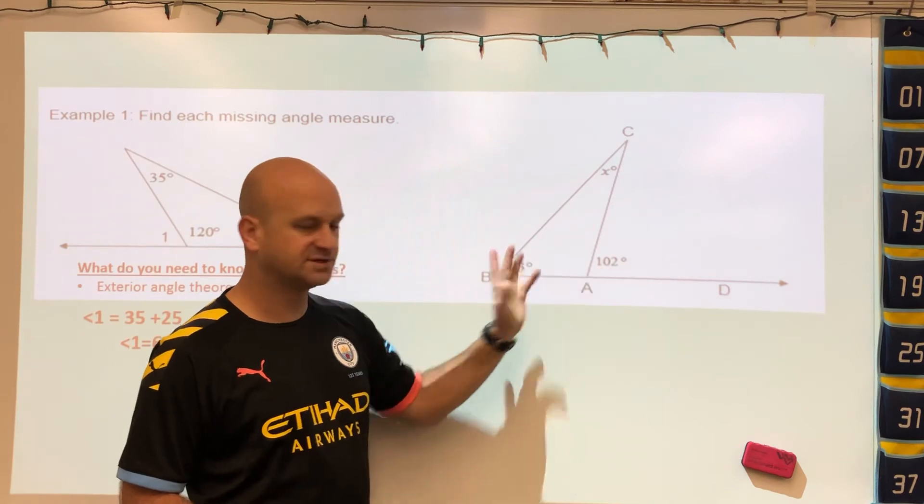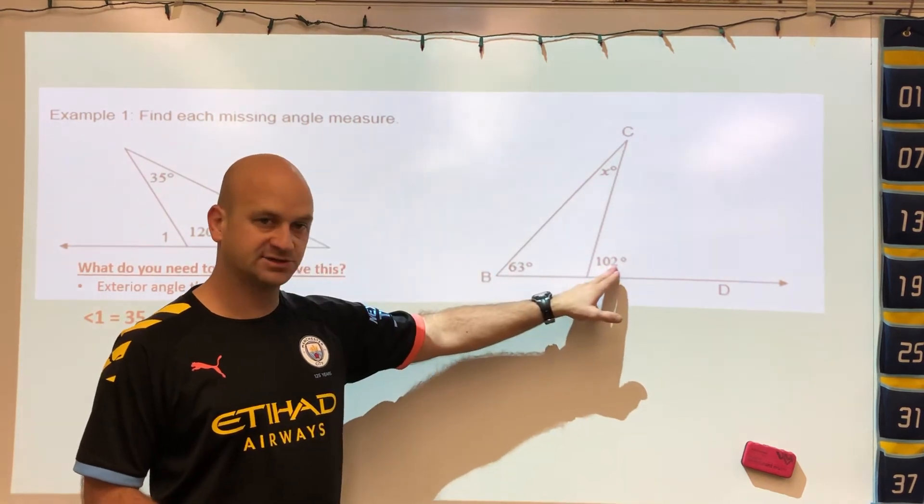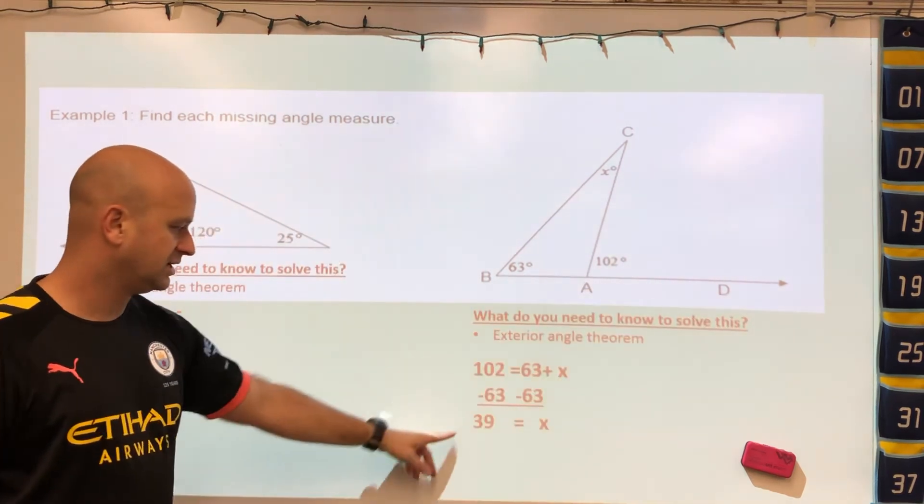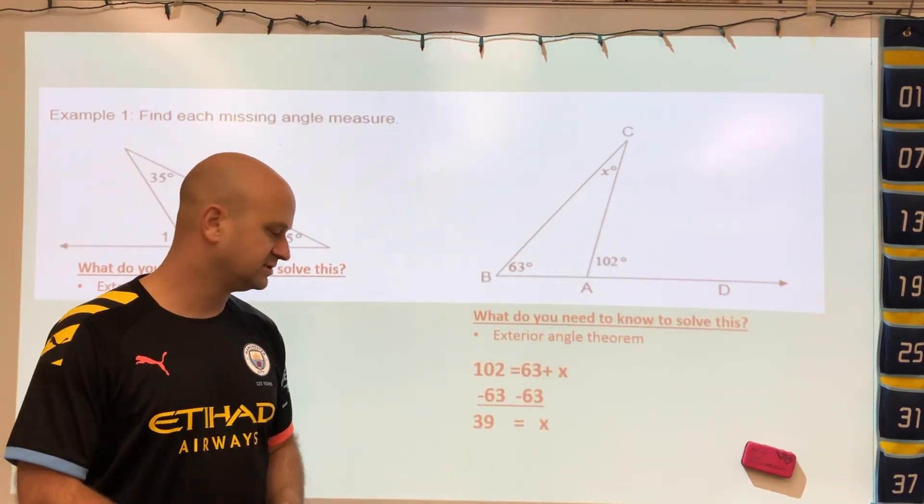In this case now we have a different example. We have our exterior angle, and if we add up x plus 63, it better add up to 102. When we do, we get x equaling 39.